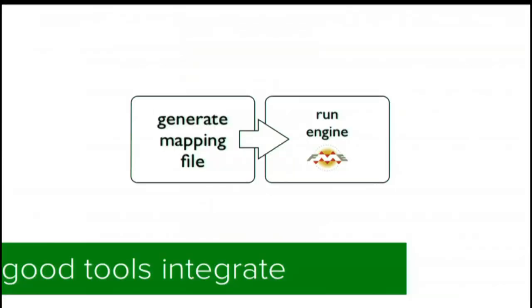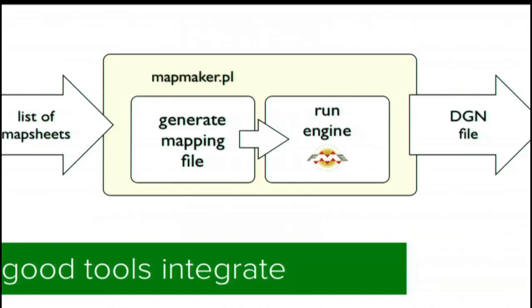But when you can completely configure your engine with a single text file, that makes it easy to integrate that engine into a larger system. So the very first web program I wrote back in 1997, when I was running a consulting company, was a web application that allowed map makers in our department to select a list of map sheets and a list of layers they wanted and output a single MicroStation file they could use to build a map product. All the application did was take the list of map sheets and layers from the web form, spit out a mapping file, and invoke the FME on it.